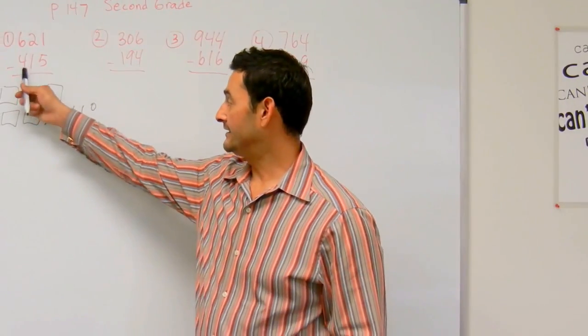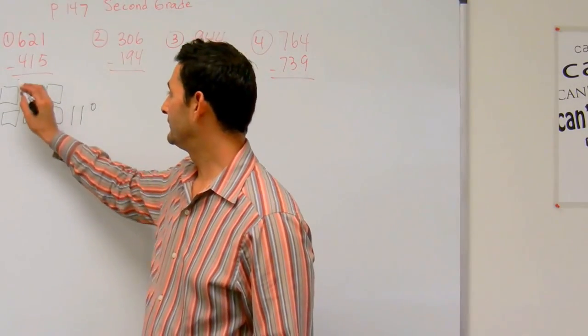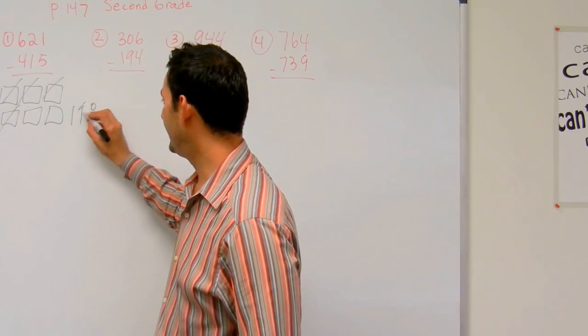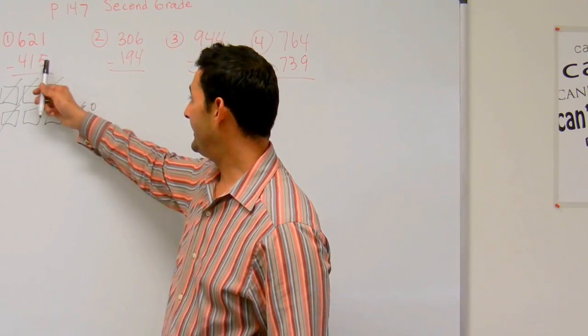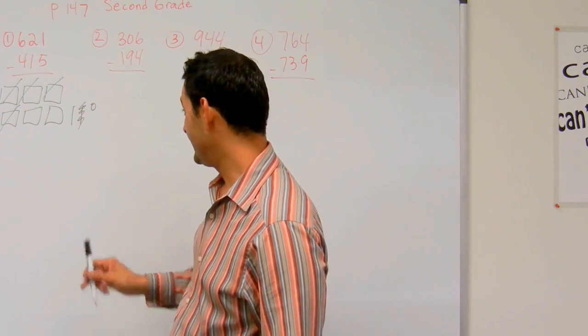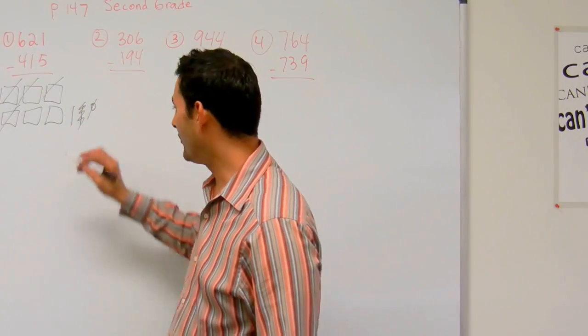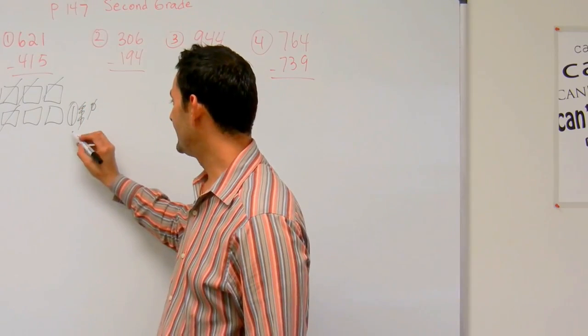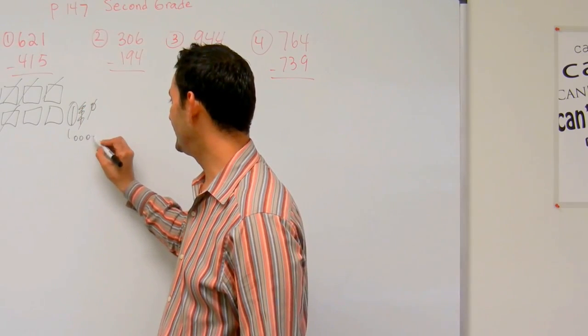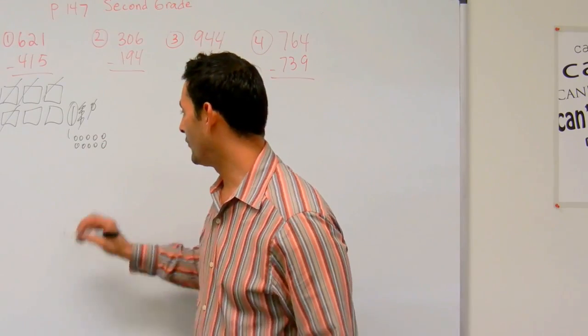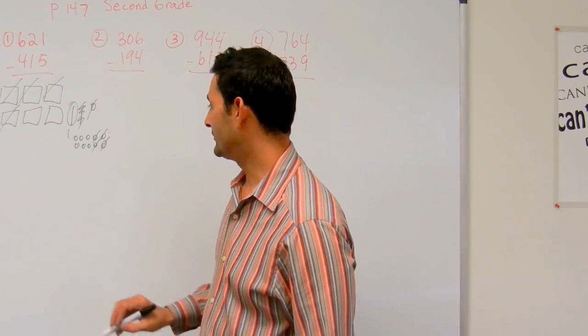So now I need to take away 400. I'm going to take away 1 bundle of 10, and I'm going to take away 5. Here I've got 1. I took away 1, I still need to take away 4 more. So what I'm going to do is convert this into 10 right there, and I'm going to take away 4 more.